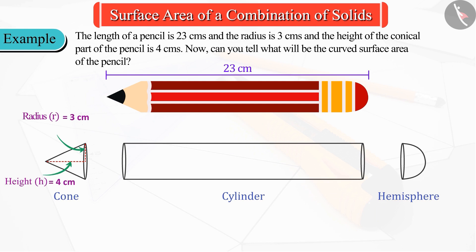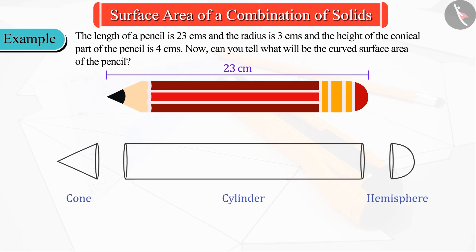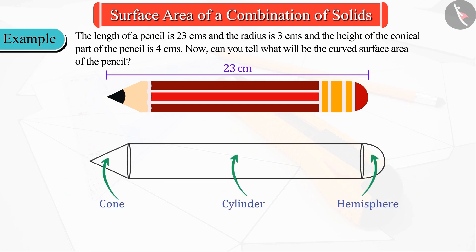Radius is 3 centimeters, the length of the cylinder is 16 centimeters, and the radius of the hemisphere is 3 centimeters. Thus we can say that this entire figure is made up of a combination of three figures.